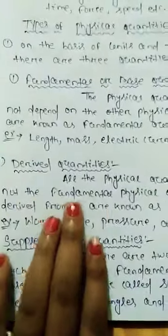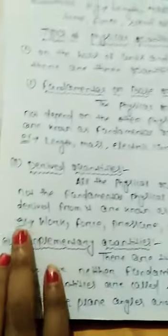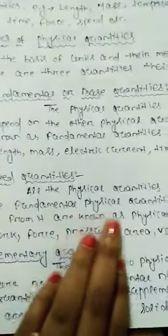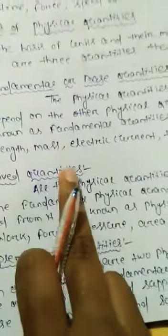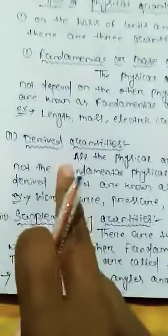Then I discuss about derived quantities. All the physical quantities which are not fundamental physical quantities but are derived from them are known as derived quantities. These physical quantities depend on the fundamental quantities.